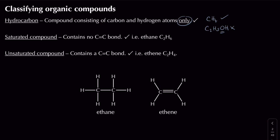There are two more ways we can classify an organic compound such as a hydrocarbon: we can classify it as being saturated or unsaturated. A saturated compound contains no C–C double bond, and an unsaturated compound contains a C–C double bond. In ethane you can see it's saturated because it contains only carbon-carbon single bonds — there are no carbon-carbon double or multiple bonds.